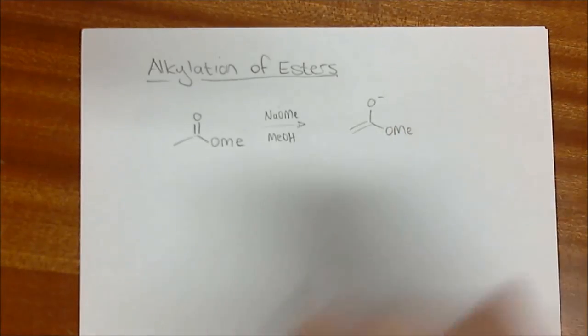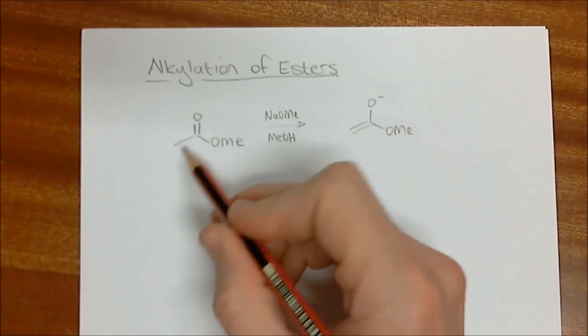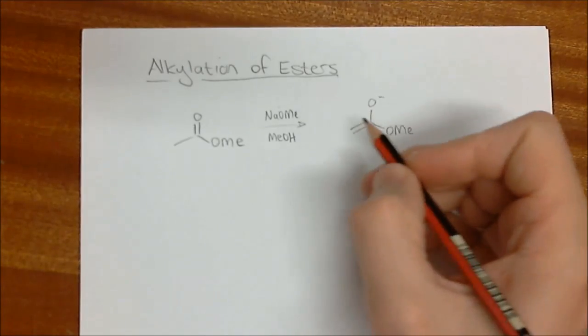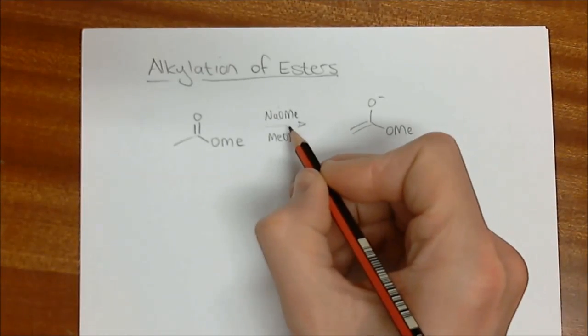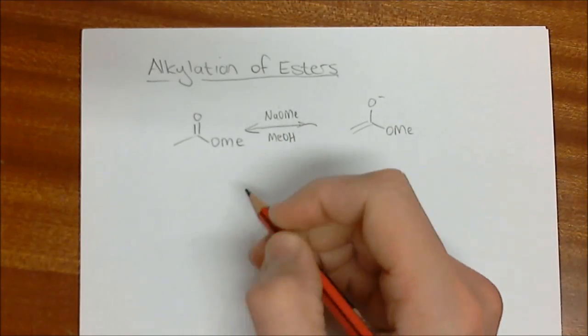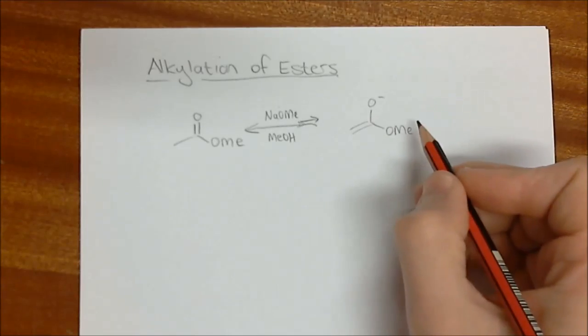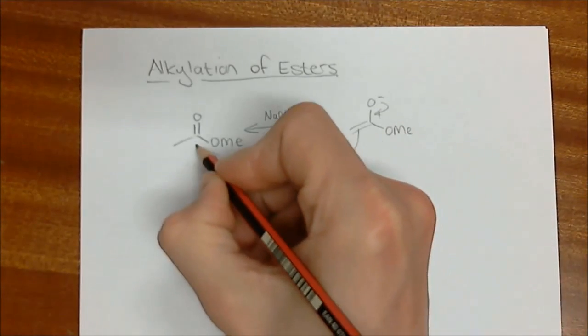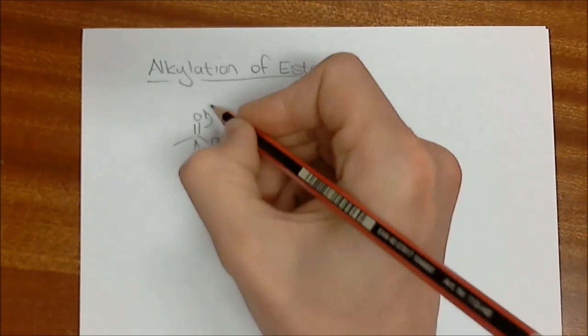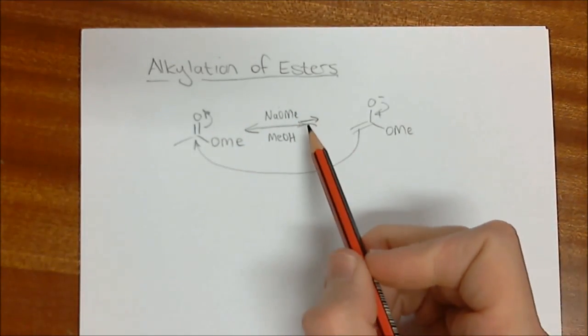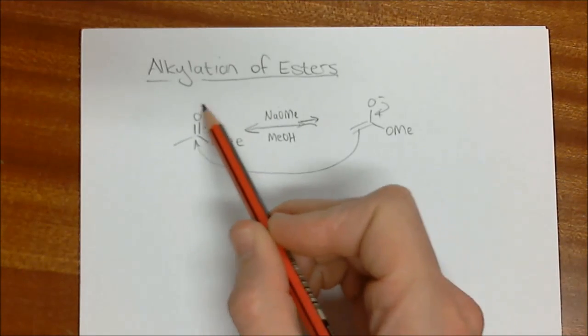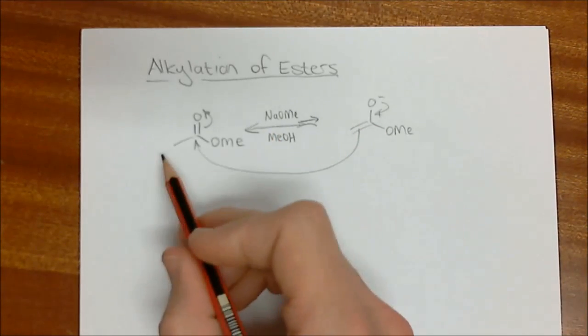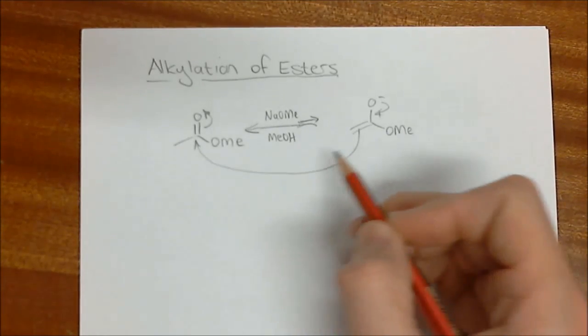The problem is that using this to generate this enolate is actually quite useless, and something else is going to happen. Remember that this is an equilibrium, and the equilibrium actually lies more to the side of the ester. Very little of the enolate is going to be formed. Unfortunately, this ester is also a very good electrophile and does something known as a Claisen condensation. At the moment, all we need to understand is that by generating an enolate of an ester, we can't do this in an equilibrium. Rather, we need to push it all the way over.